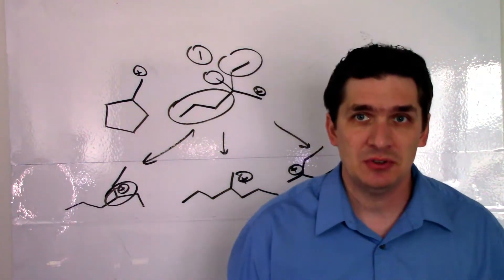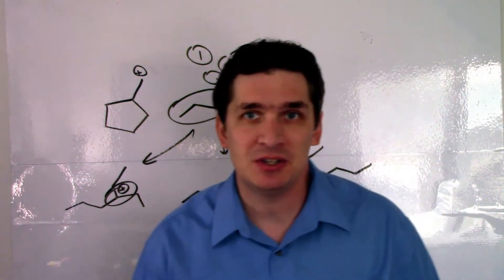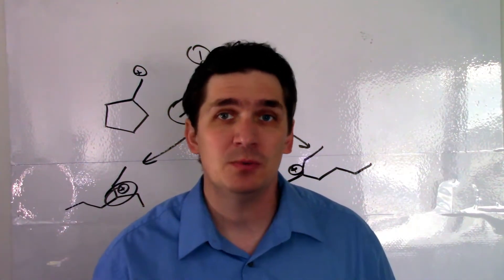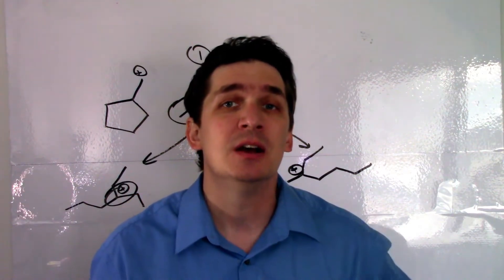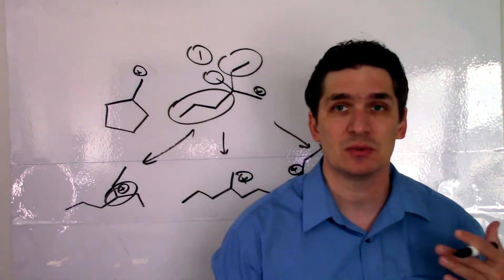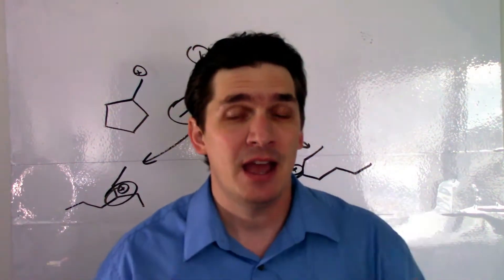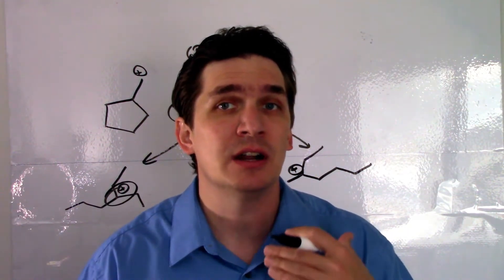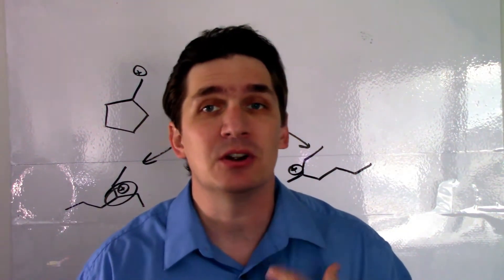So when it comes to carbocation rearrangements, we're not limited just to methyl and hydrogen groups. We can have ethyl, we can have propyl, we can have tert-butyl - all these groups. But what's going to limit these and what will decrease their likelihood of being observed is the fact that they move as the square root of mass. The heavier they get, the slower they move. And so while it may occur, it's going to occur at a much slower rate and therefore the product's gonna be harder to see.